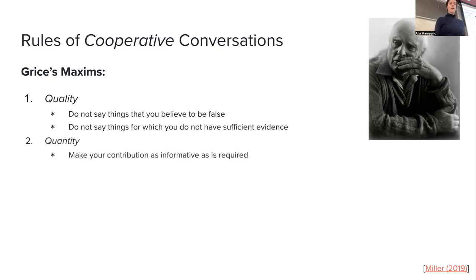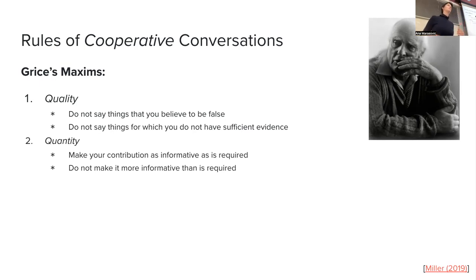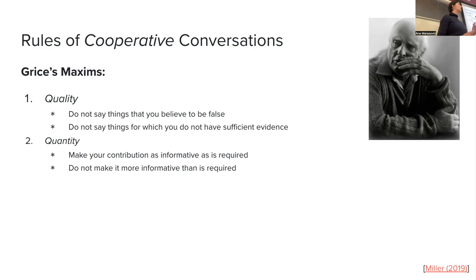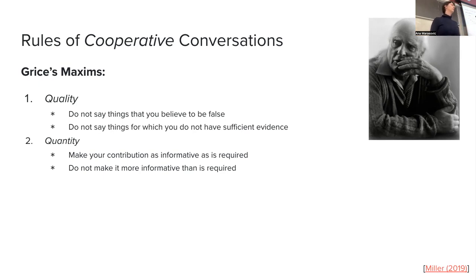The maxim of quantity says: make your contributions as informative as required and do not make it more informative than required. This also goes together with the argument I was mentioning when presenting contrastive explanations, where I said that for a while in machine learning we wanted to present every single reason for the prediction, but a person actually does not want to hear every single cause in the causal chain — but rather the difference between two options.